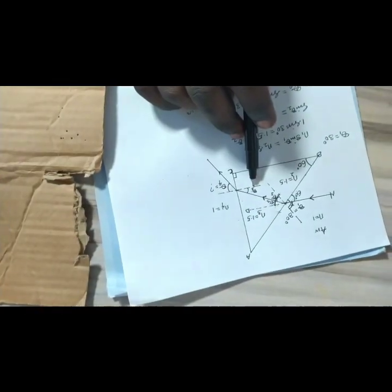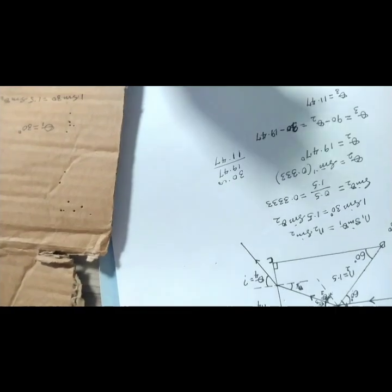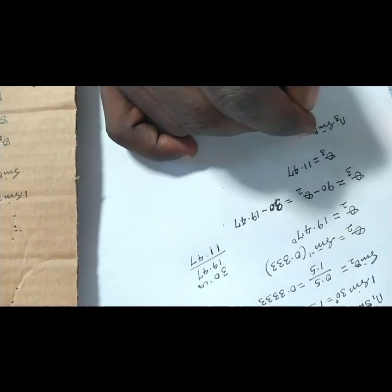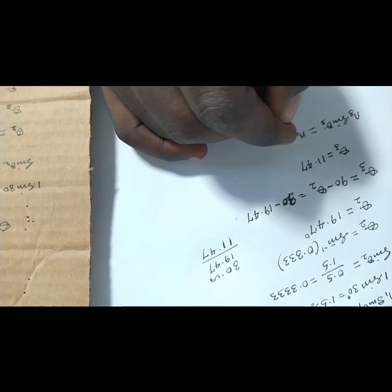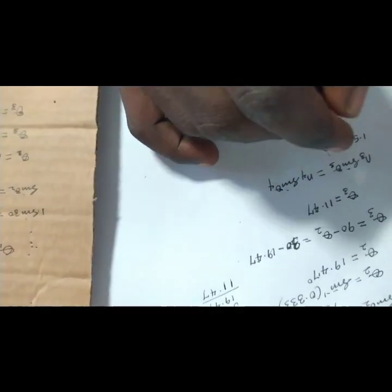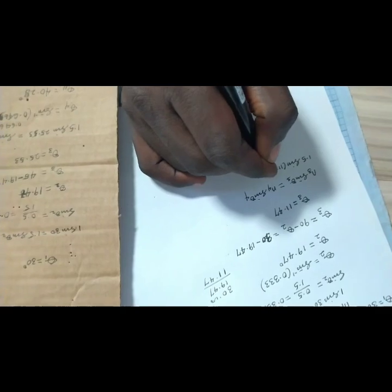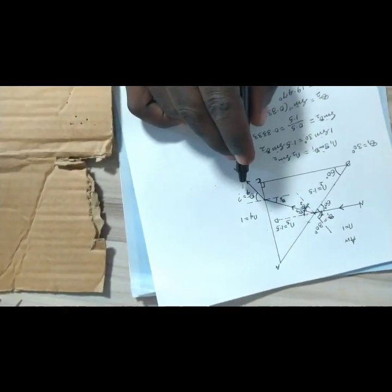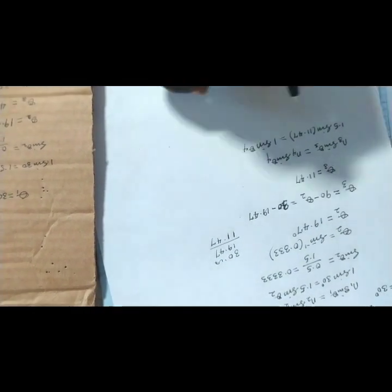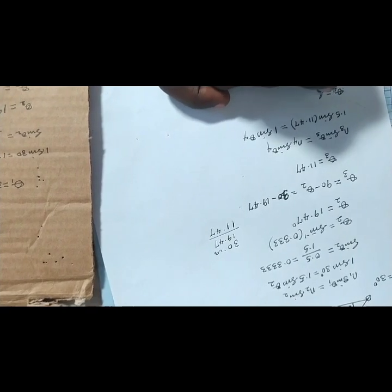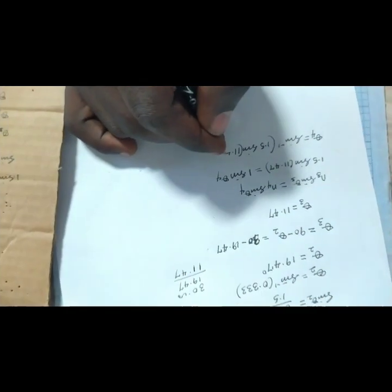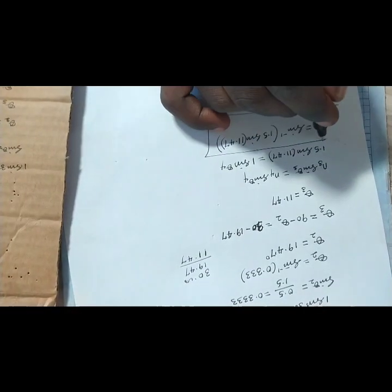Now we can find theta 4. We apply Snell's law again: n3 sine theta 3 equals n4 sine theta 4. n3 is still in the glass, so it is 1.5. Sine of 11.47 degrees equals n4, which is air = 1, times sine theta 4. Therefore theta 4 equals arcsin of 1.5 times sine 11.47. Whatever result you get is the value for theta 4.